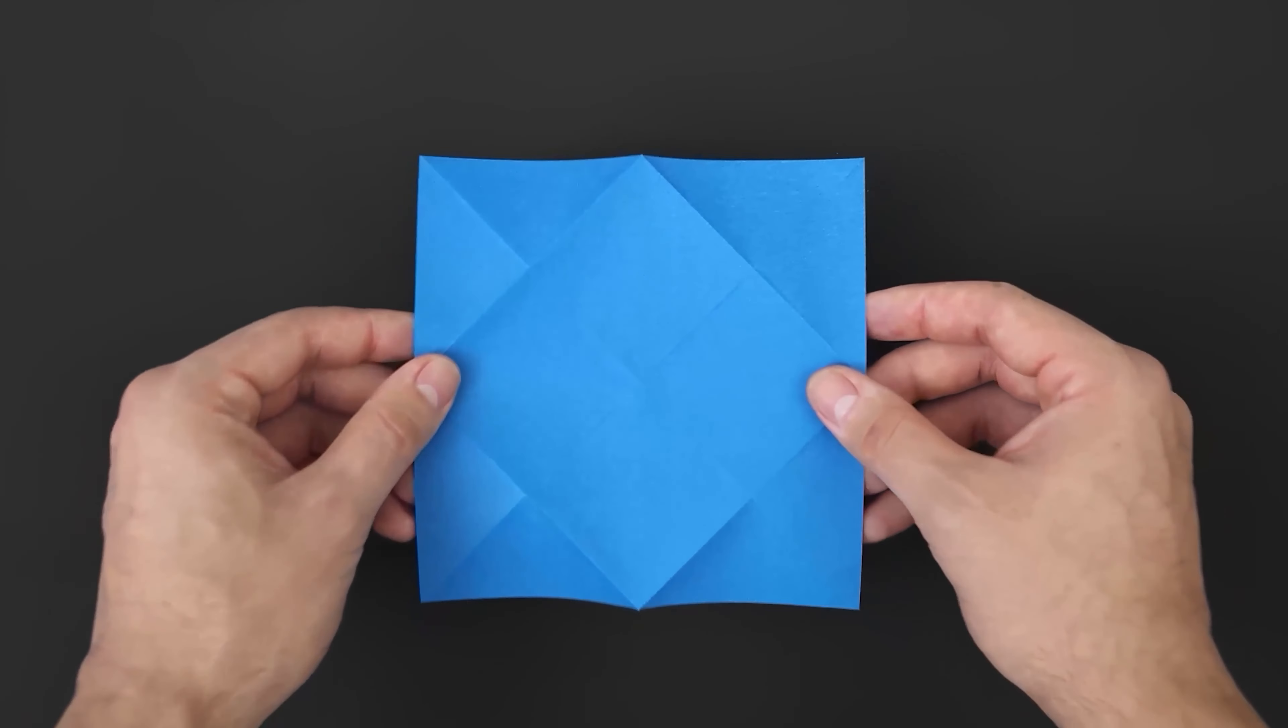For the next step, let's turn it over. Rotate the paper in this position and fold this little square at the top. Just bring the paper to the middle, like this.